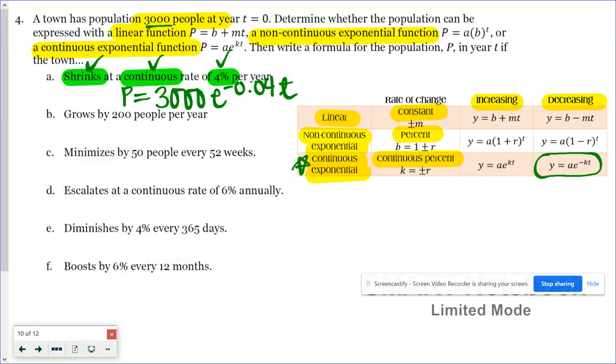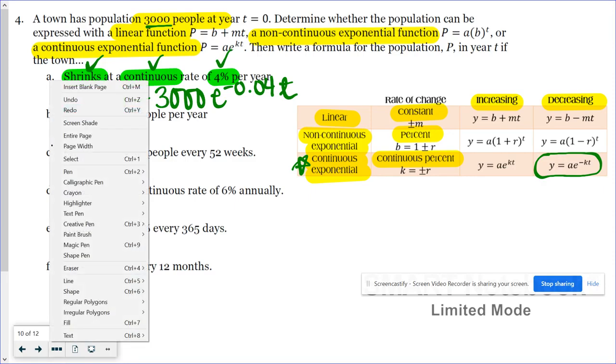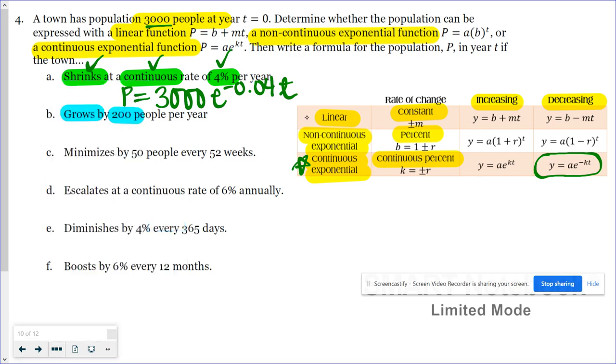In the next one, it says it grows by 200 people per year. That's a constant rate of change, making this one linear. Furthermore, it says it's growing, so it's an increasing linear function. It's going to look similar to y equals b plus m times t.